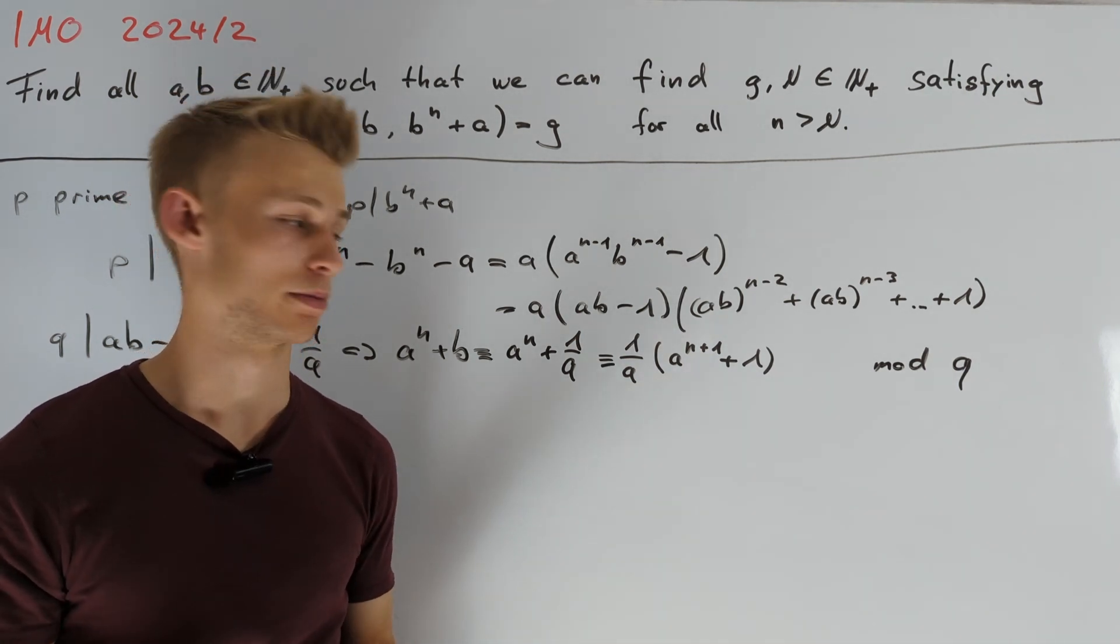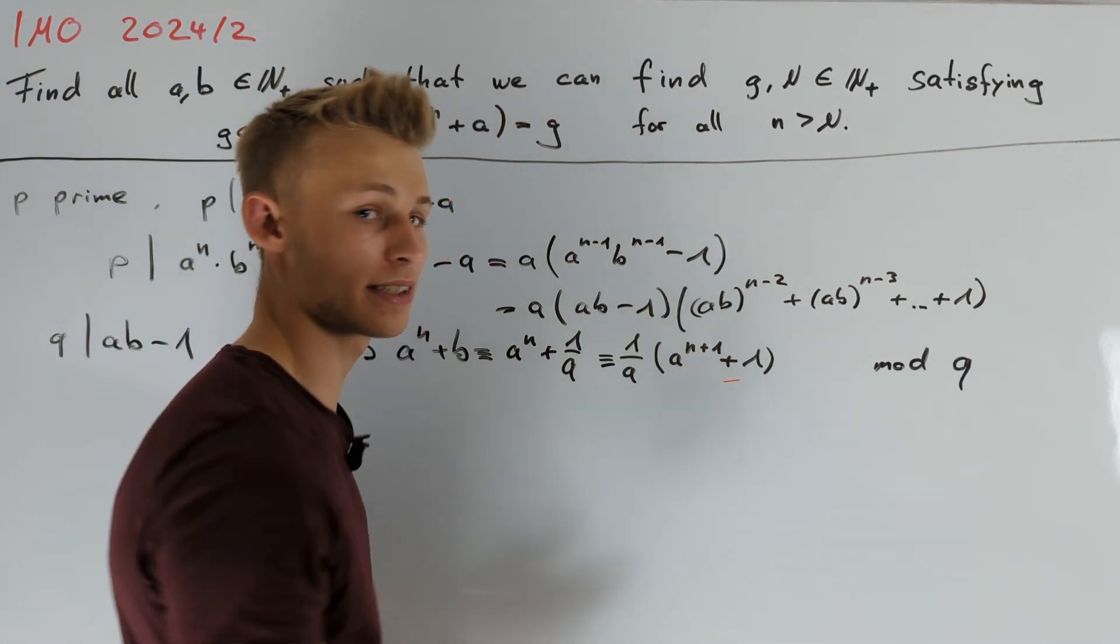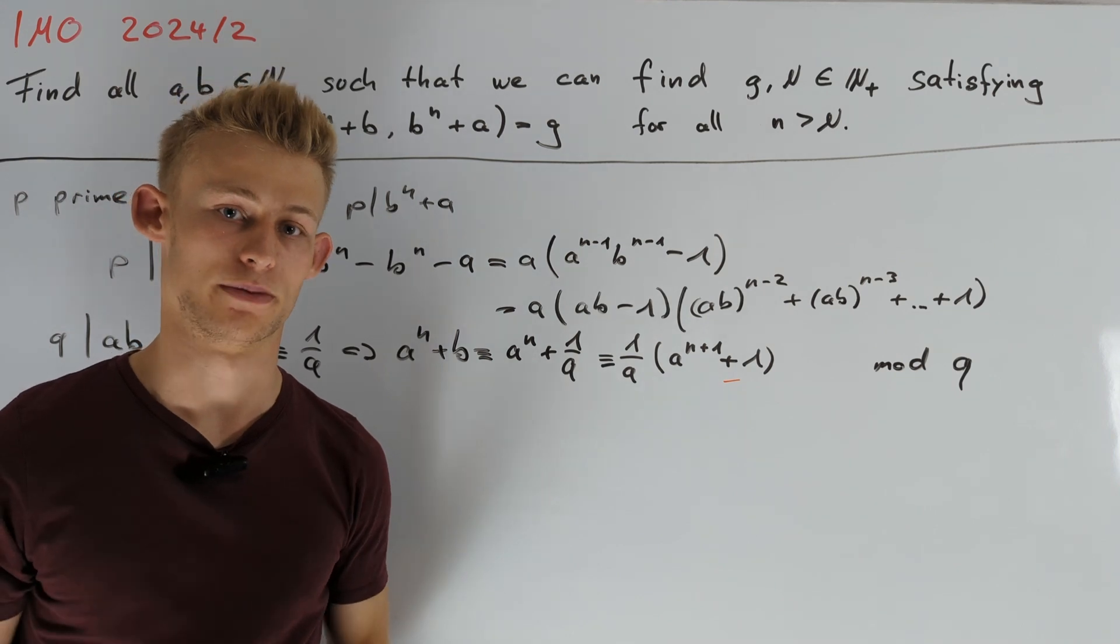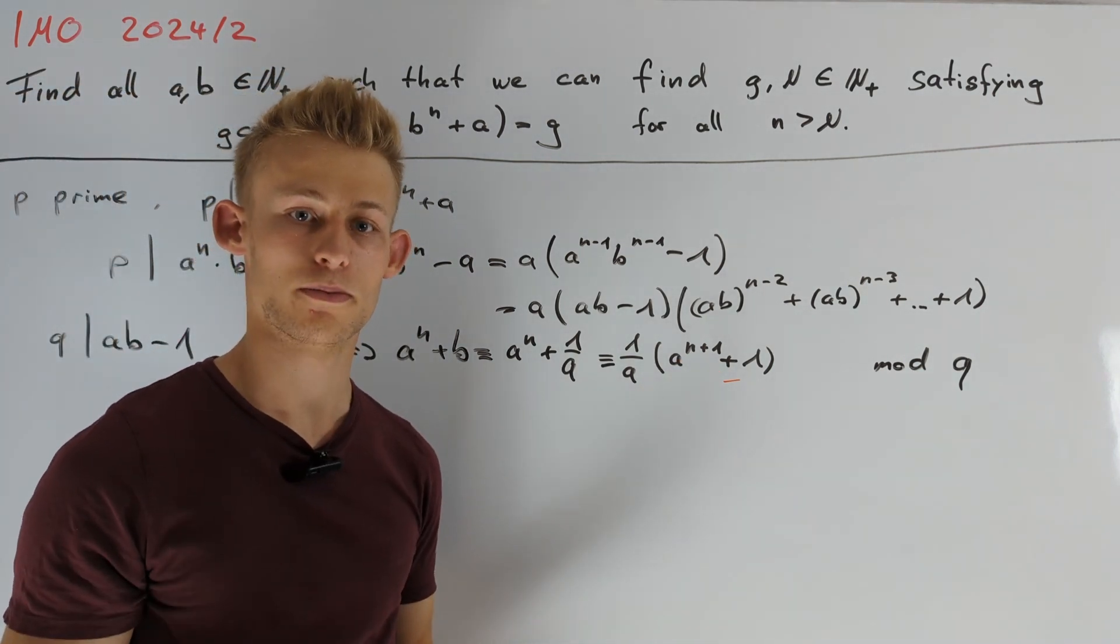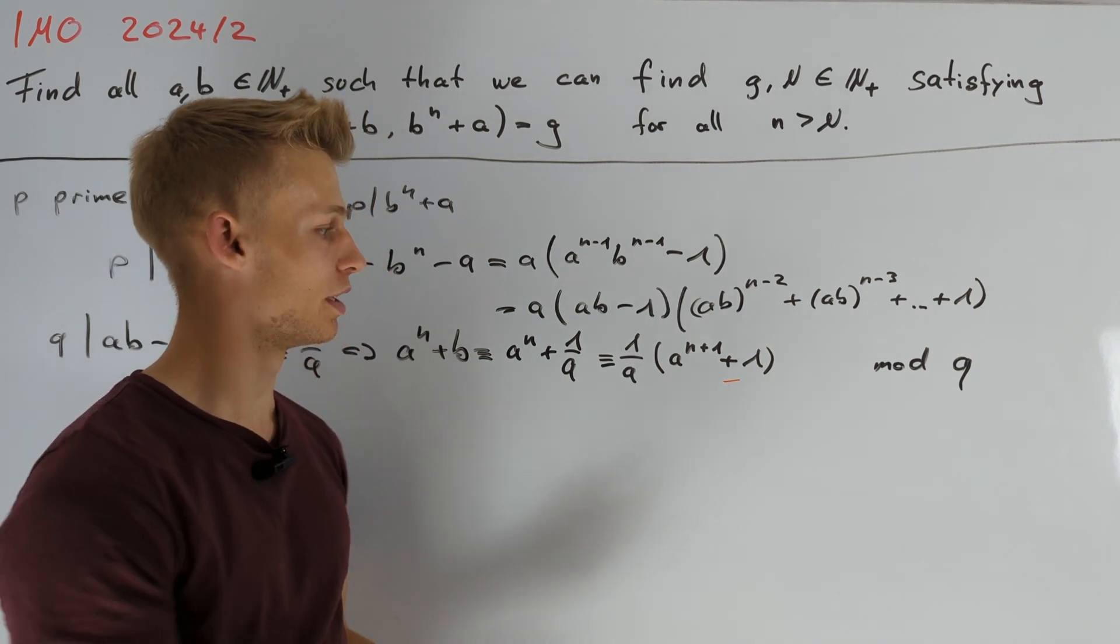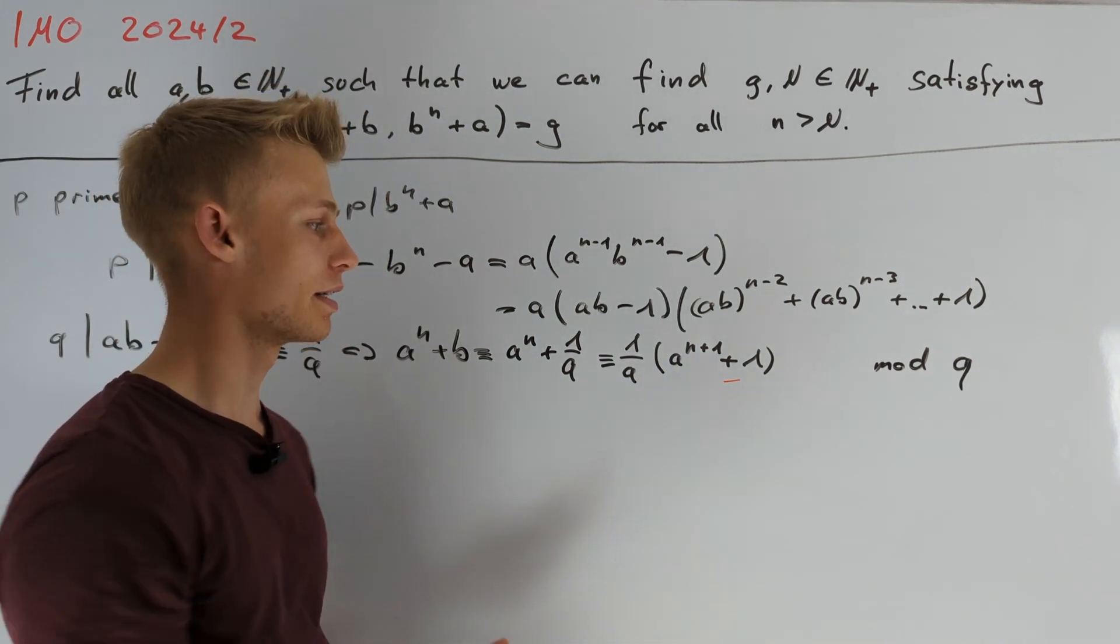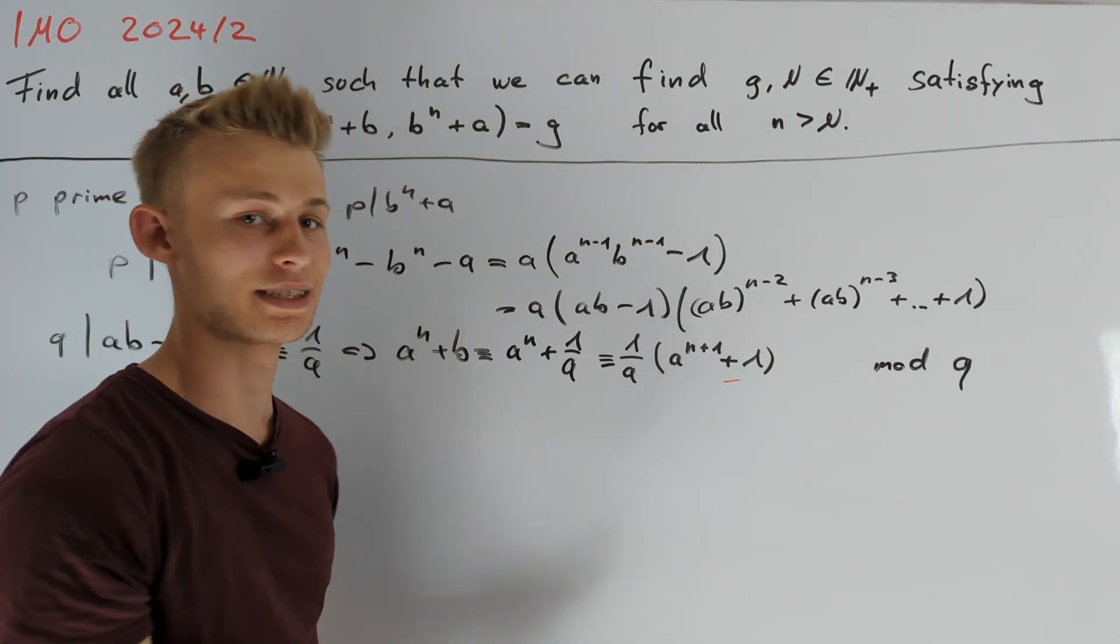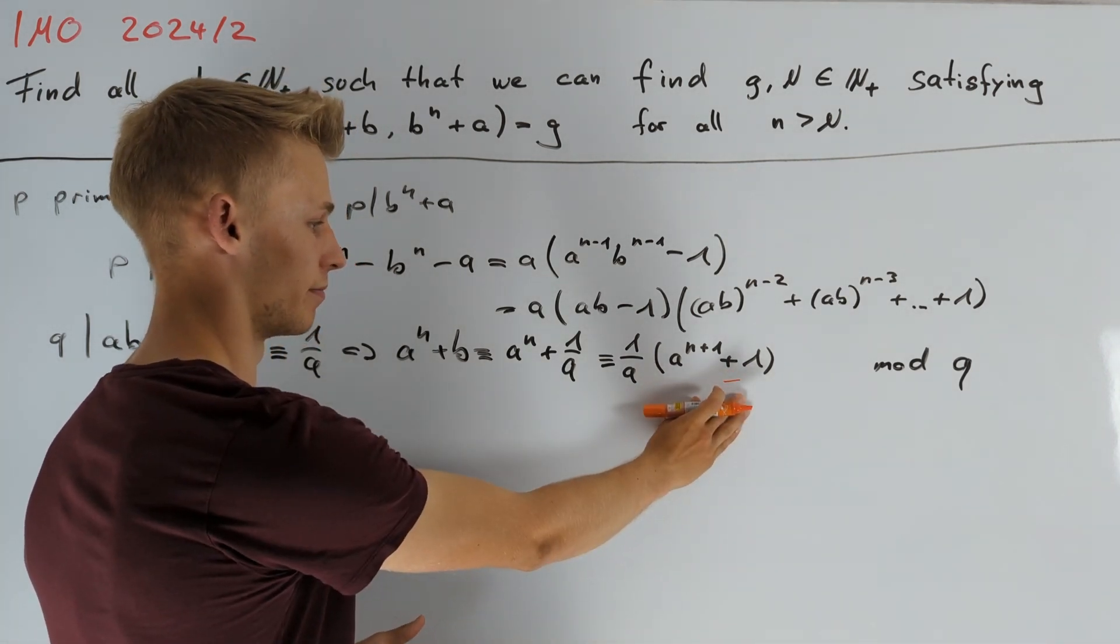But it would be possible if instead of this plus sign here, we would have a minus sign. This is because of Fermat's little theorem. Namely, by choosing n plus 1 congruent to 0 modulo q minus 1, we know that a to the power of n plus 1 is congruent to 1 modulo q. Let's track back where this plus here came from and then we can maybe make appropriate changes to get this orange minus here.